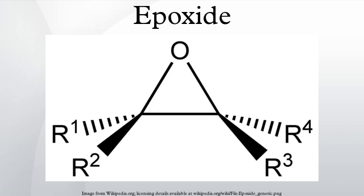Nucleophilic epoxidation: electron-deficient olefins such as enones and acryl derivatives can be epoxidized using nucleophilic oxygen compounds such as peroxides. The reaction is a two-step mechanism: first, the oxygen performs a nucleophilic conjugate addition to give a stabilized carbanion; this carbanion then attacks the same oxygen atom, displacing a leaving group from it to close the epoxide ring. The carbon atoms of an epoxide are approximately sp³ hybridized and thus may be stereogenic positions.